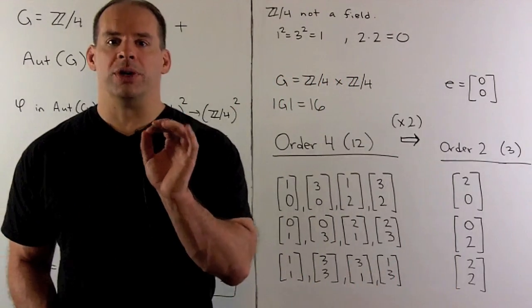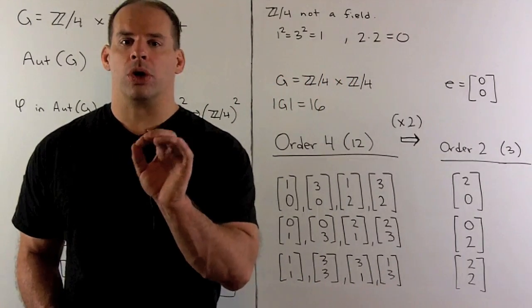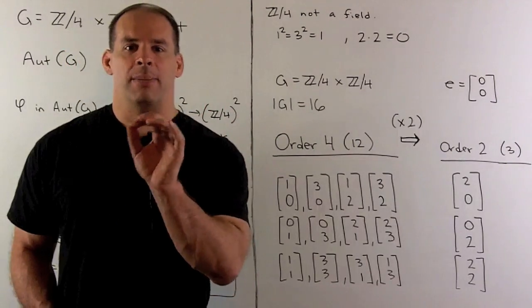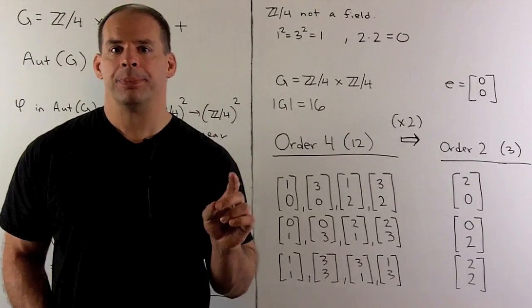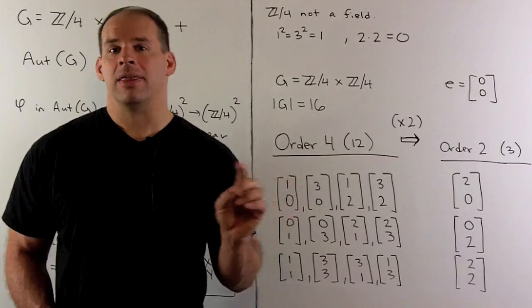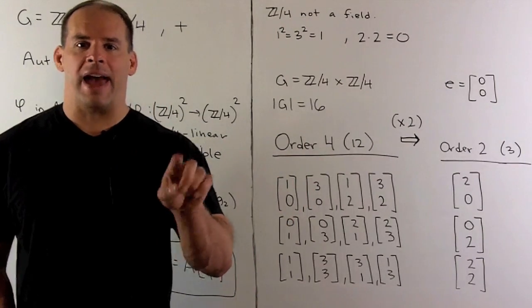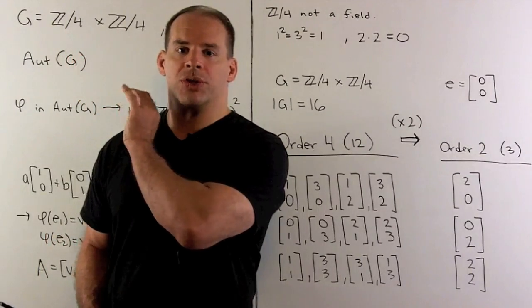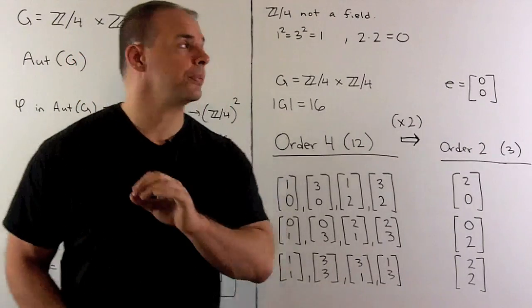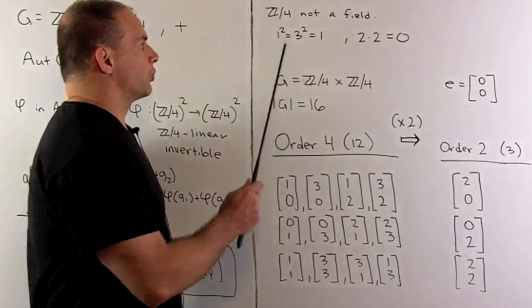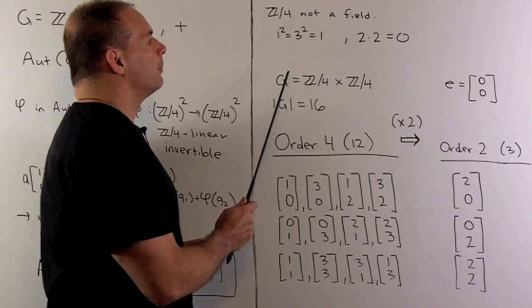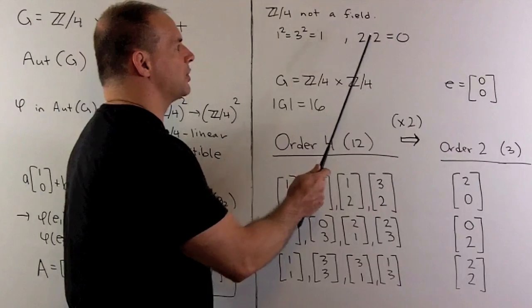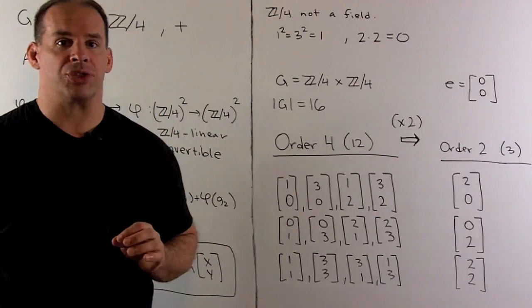Now, the first thing I want to do is to sort out the orders of the elements of our G. So, if I had Z mod P cross Z mod P, where P is prime, then every non-zero element in that group has order P. It's not going to be the case here. So, we want to sort that out first. Now, just to recall, for Z mod 4, we have 1 squared equals 3 squared equals 1. And then, we have 2 times 2 is equal to 0. So, 2 is a zero divisor.